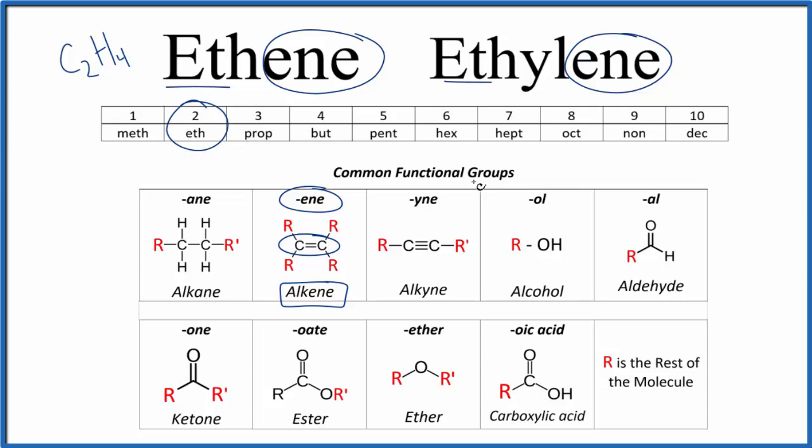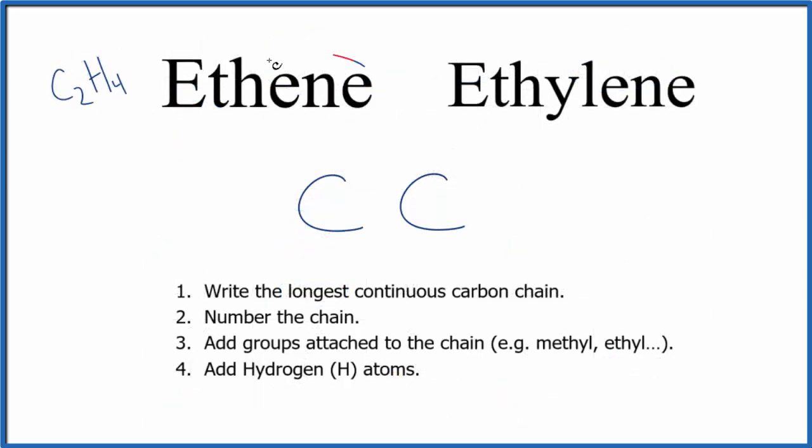So let's put two carbons up. And we said because of this -ene, we have a double bond. There's really only one place we can put a double bond. That's right here between the carbons.